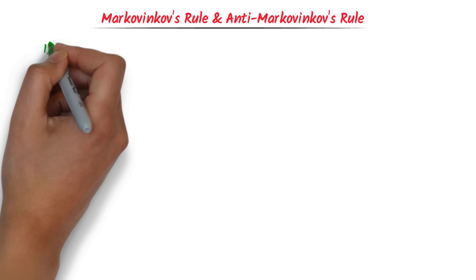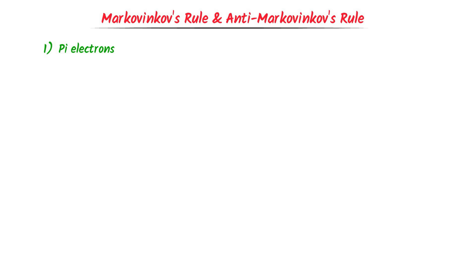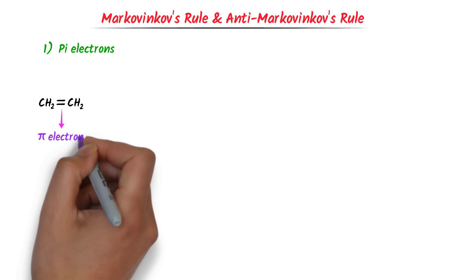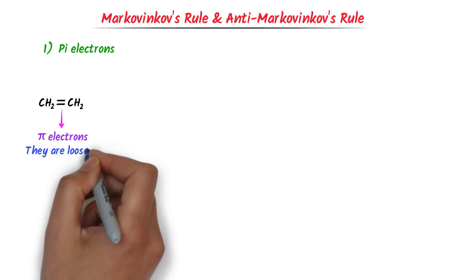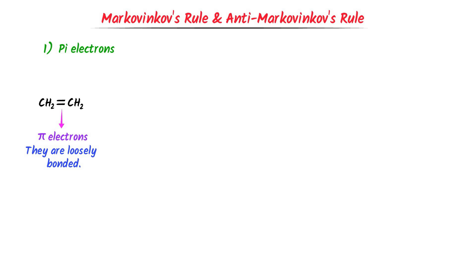Markovnikov's Rule and Anti-Markovnikov's Rule. Let me teach you some important concepts, like understanding pi electrons. Let's consider this alkene. We know that it contains a double bond which has pi electrons. These pi electrons are loosely bonded, so if we bring any electrophile like a positive hydrogen ion, it can easily attack on the pi electrons.